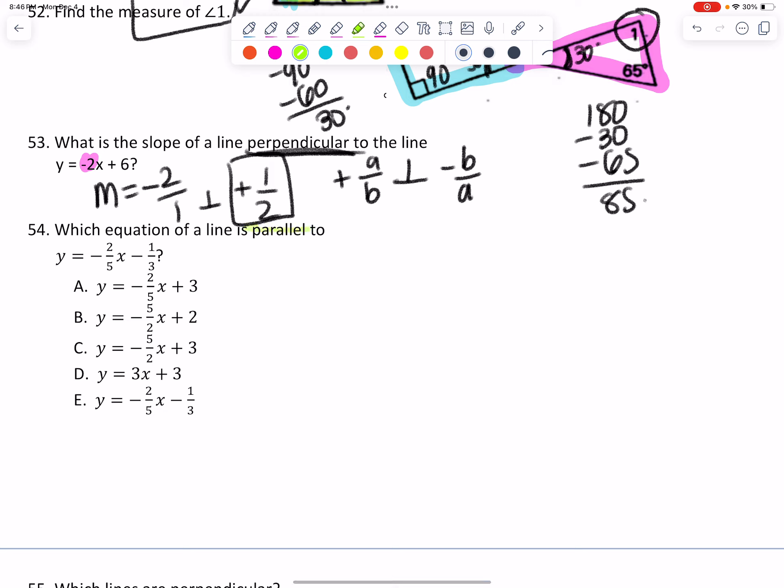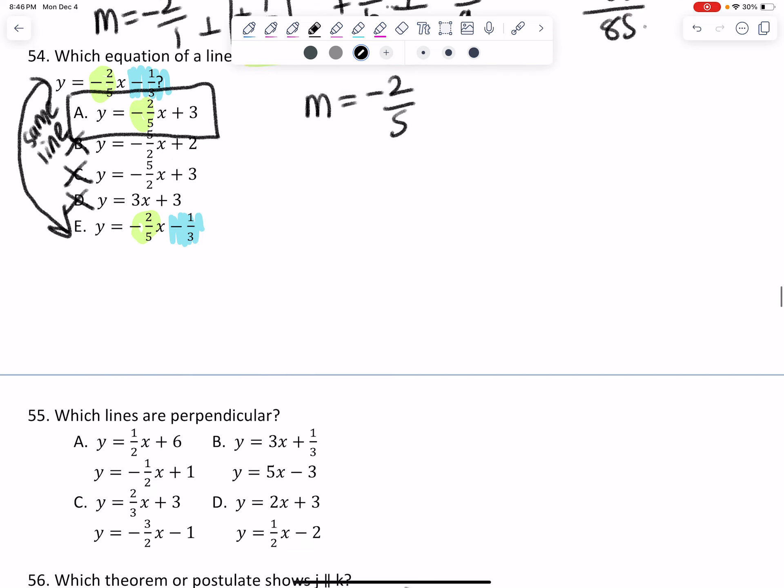Very similar question, but instead of asking what is perpendicular, it says which one is parallel? Parallel lines have the same slope. So I'm looking for a slope that is also negative two fifths. So I can immediately get rid of all the ones that are not negative two fifths slope. These ones have the same slope. So we need to see which line is parallel to it. Something I noticed is that this says minus one third, just like this one says minus one third. So these two lines are actually the same line. And so since those are the same line, they can't be parallel to each other. So it has to be a. A would have some space in it. And so it would not be crossing that original line.